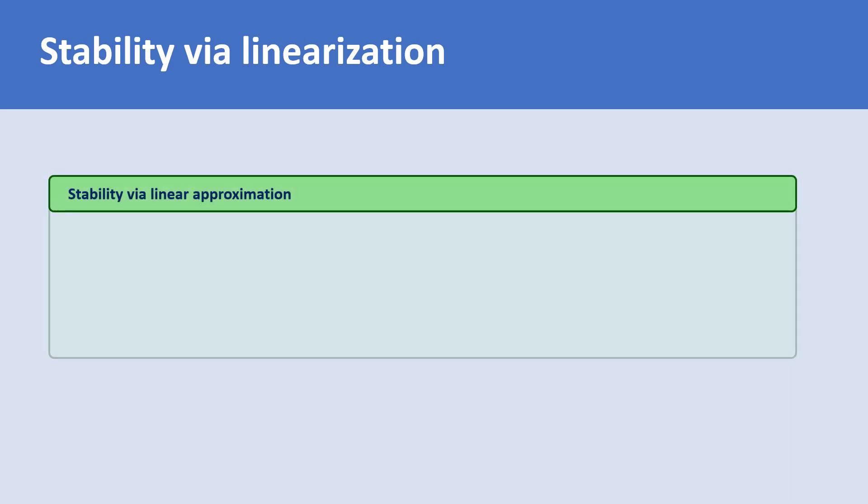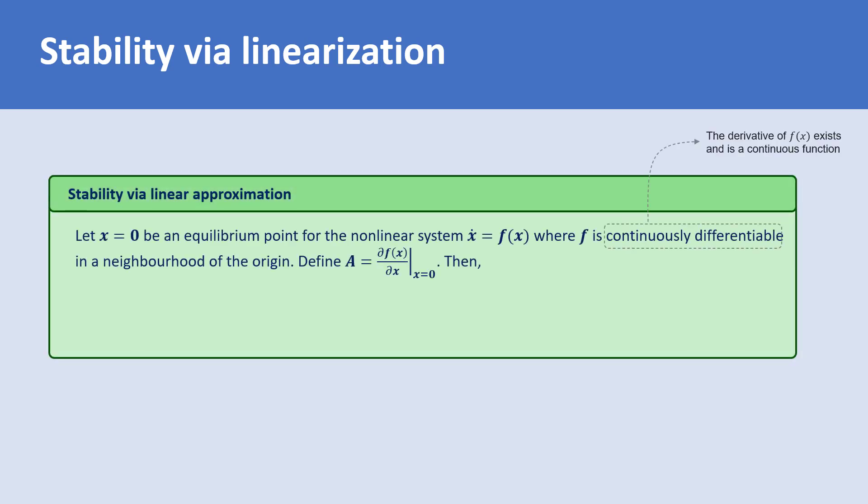Let x equals 0 be an equilibrium point for the nonlinear system x dot equals f of x. We assume f is continuously differentiable in the neighborhood of the origin. Define A as the partial of f with respect to x evaluated at the origin. Then, the origin is locally exponentially stable if and only if all eigenvalues of A have strictly negative real parts.